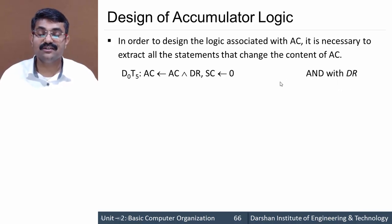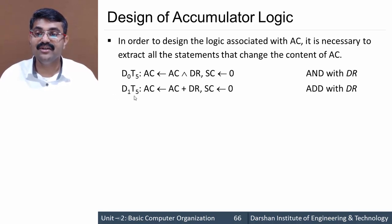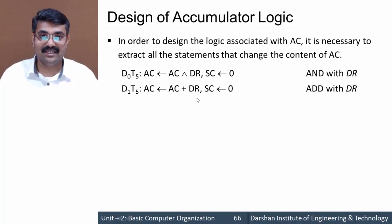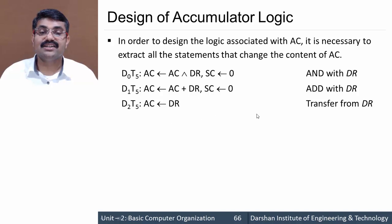The second instruction which affects the accumulator is ADD. At time D1T5, AC = AC + DR takes place. The next instruction is transfer from DR — at time D2T5, the load instruction occurs.